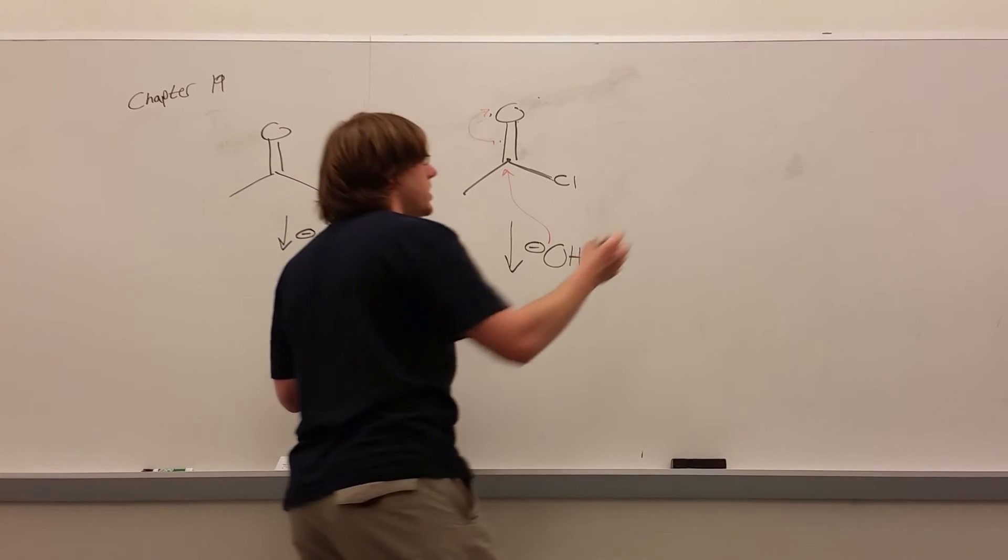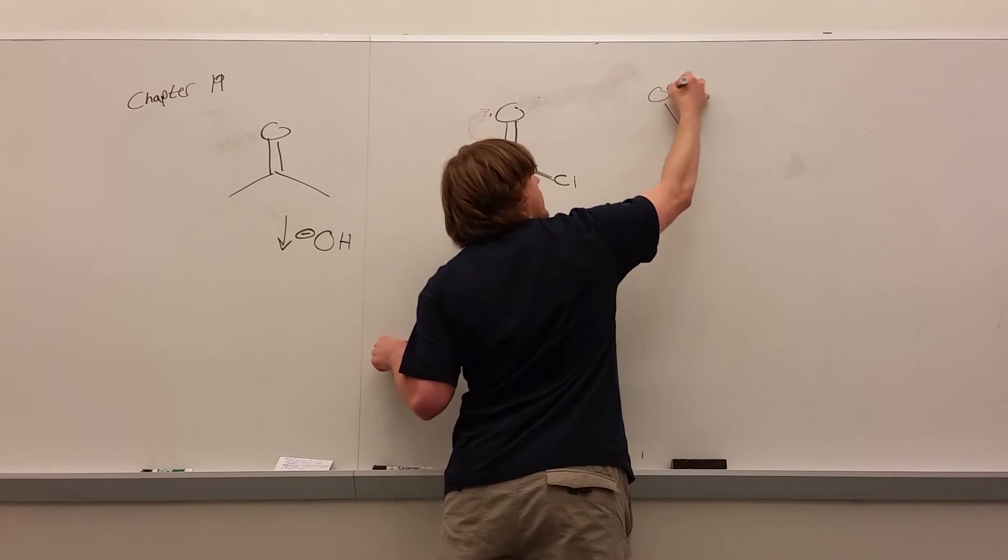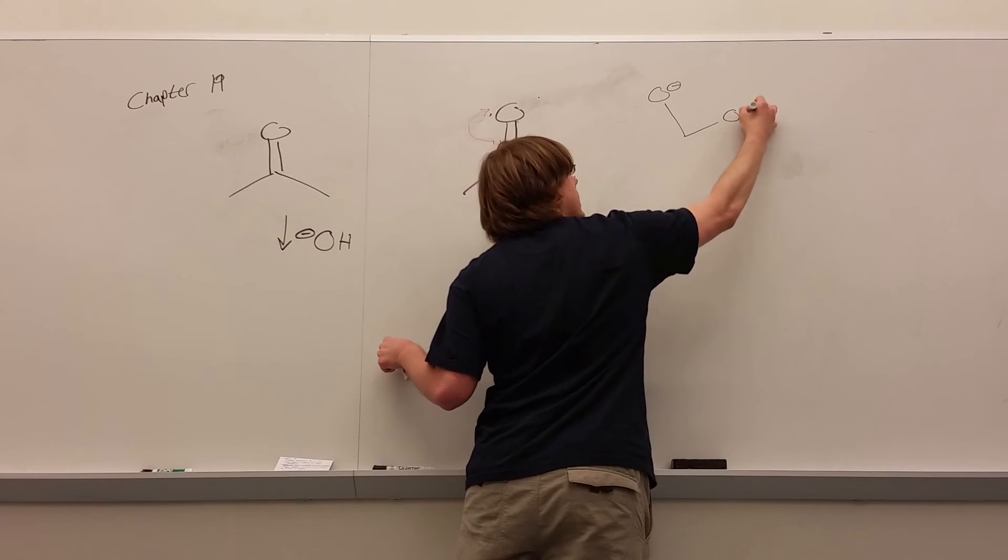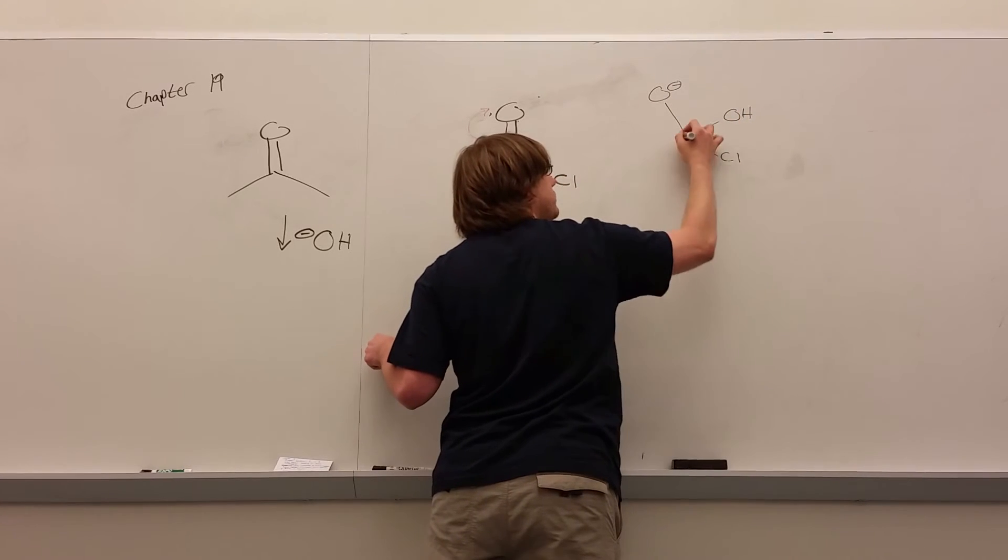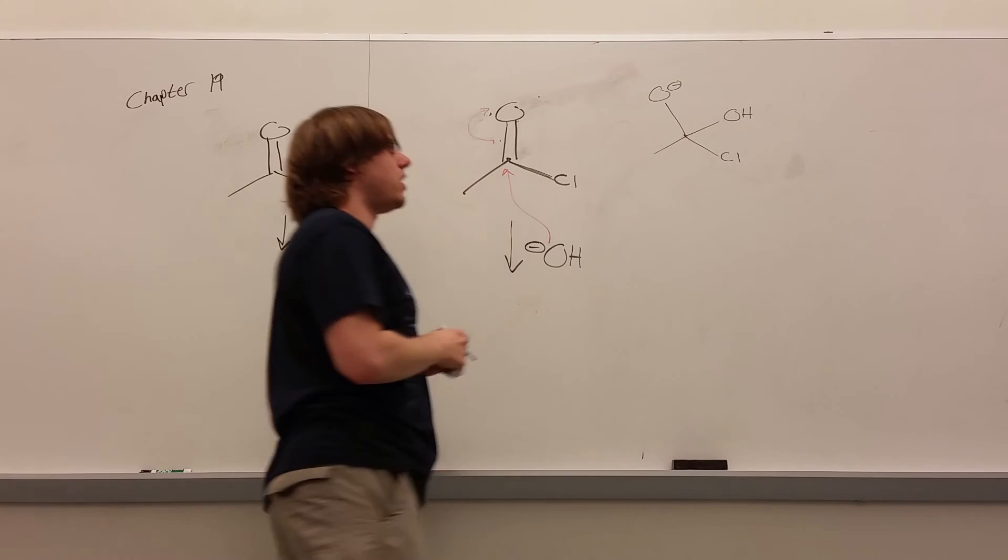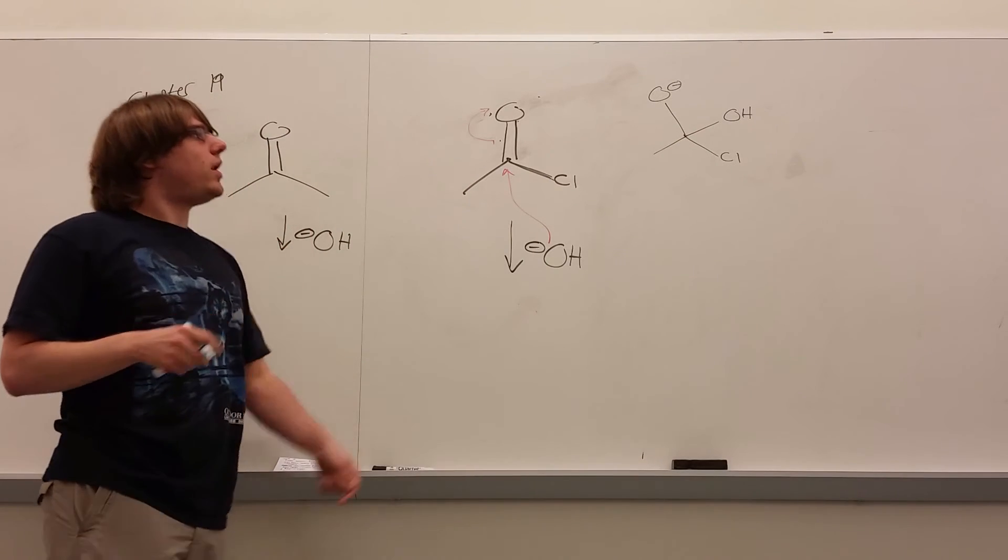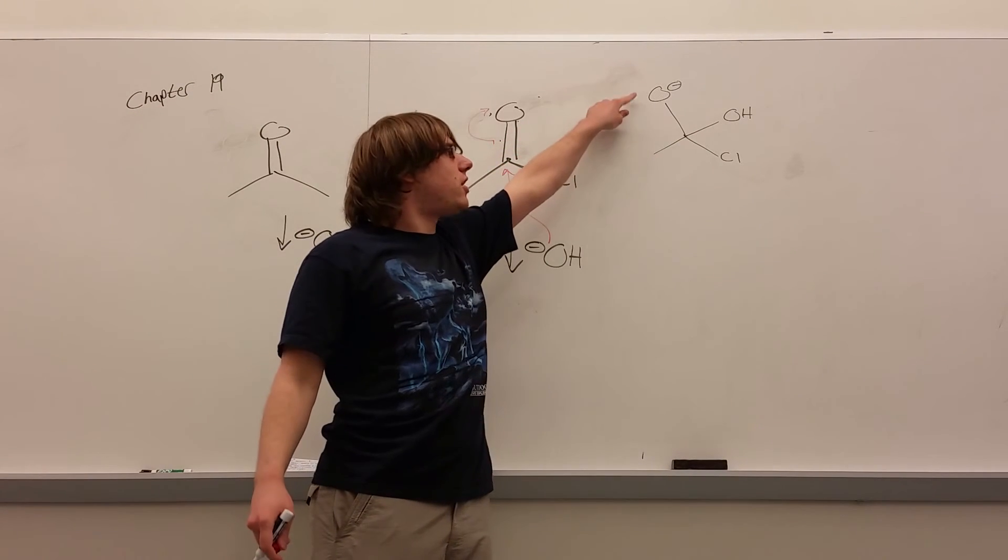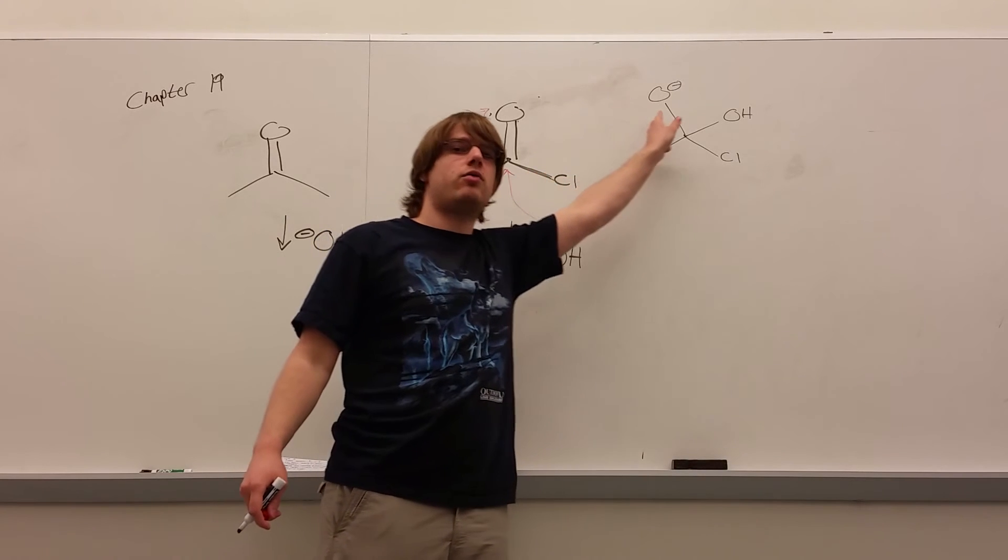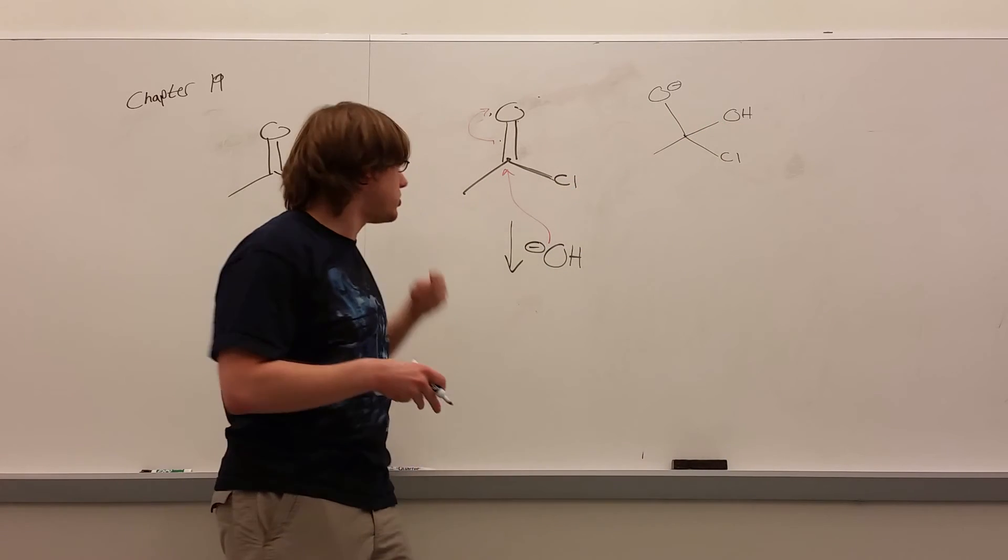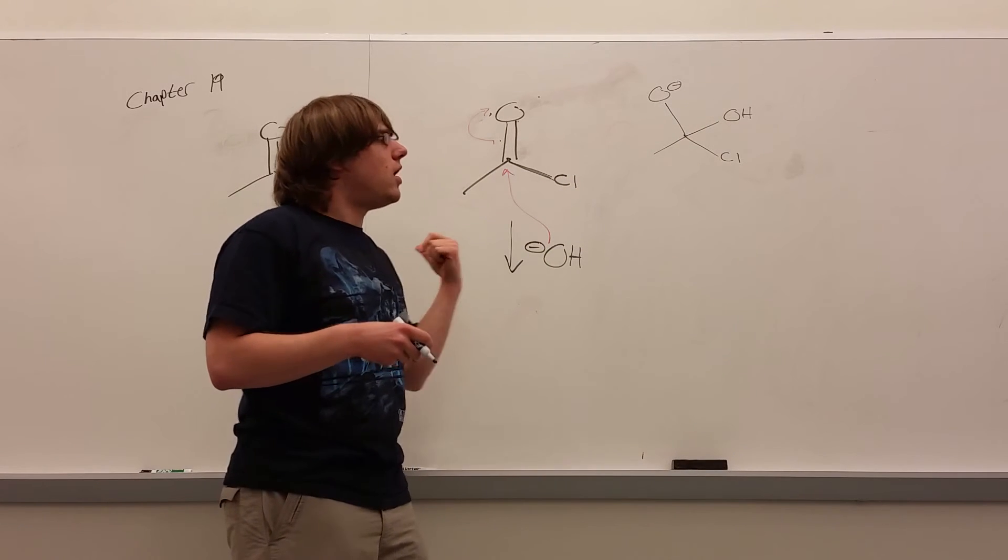That would leave you with a tetrahedral intermediate we love to talk about: OH-, the OH that attacked, the chlorine, and then the carbon that was there. Now, this is the key point. Whenever you have an O-, that O- is always going to look to swing down and reform its double bond, kind of like what we saw when I drew out the enolate before.